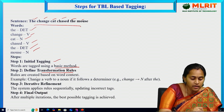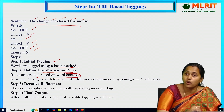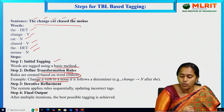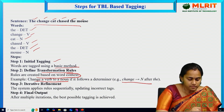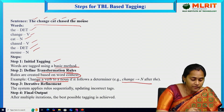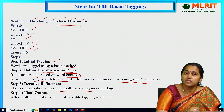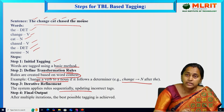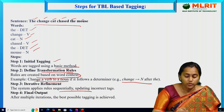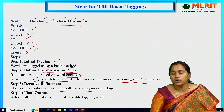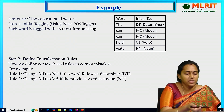The rules are created based on word context. For example, some rules handle verb-to-noun transitions. In the iterative refinement step, the system applies rules sequentially, updating the assigned tags by iteration. The final output is the best POS tagging output, which we will assign. Let's see the example.